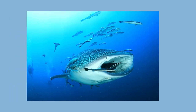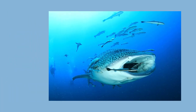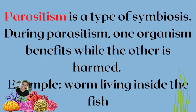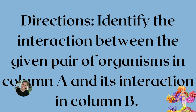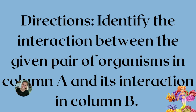The next one is parasitism. It is a type of symbiosis where one organism benefits while the other is harmed. For example, a worm living inside a fish. Did you learn something today? I hope you did! Let us answer this activity.